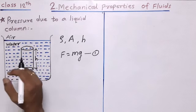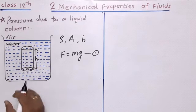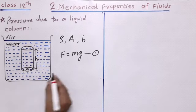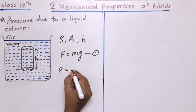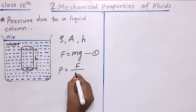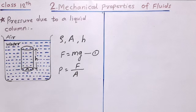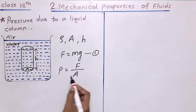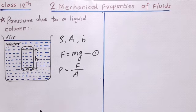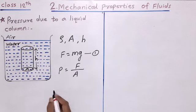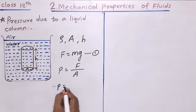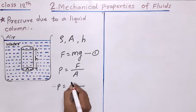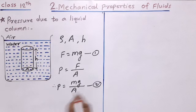The pressure exerted by the liquid column at the bottom of the cylinder is given by the formula P = F/A. This is just the definition of pressure — force per unit area is called pressure. Now if we put the value of F from equation one, we get P = mg/A. Suppose this is equation number two.